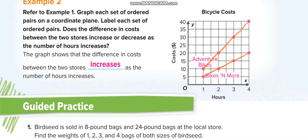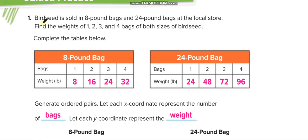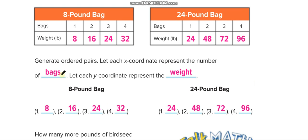Down here, bird seed is sold in eight-pound bags and twenty-four-pound bags. This is the table for the eight-pound bag and this one for the twenty-four-pound bag. Each eight-pound bag: one bag eight pounds, two bags sixteen, three bags twenty-four, four bags thirty-two. For the twenty-four-pound bag: two bags forty-eight, then seventy-two, then ninety-six.